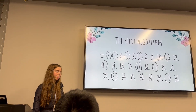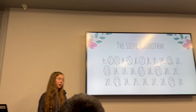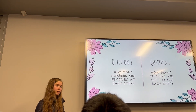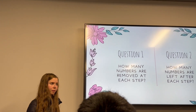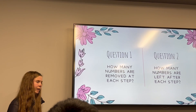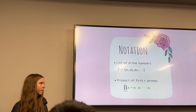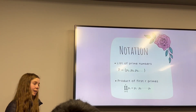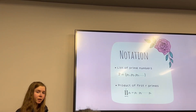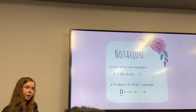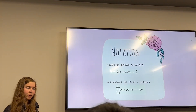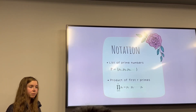In order to better understand that important pattern, we ask the following questions: first, how many numbers are removed at each step of the algorithm? And second, exactly how many are left behind after each step's completion? To analyze these questions, we'll need some mathematical language. When we want to refer to a prime number, we'll do so based on its position in the overall list of prime numbers, ordered from smallest to largest.